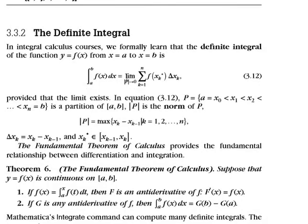Now we are talking about the definite integral. In definite integral the limits, the lower limit and the upper limit are given. That one is here, a and b. In that case, how do we calculate in Mathematica?